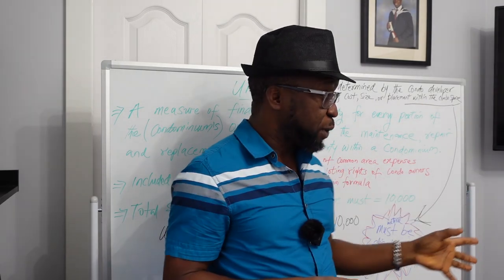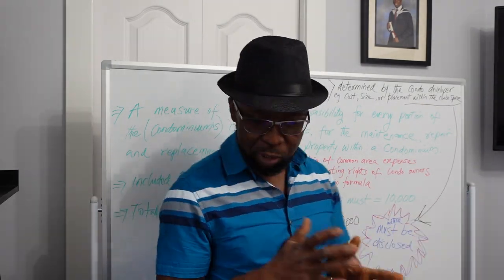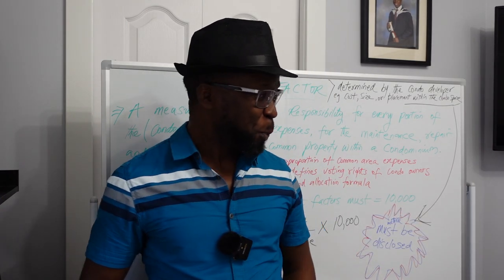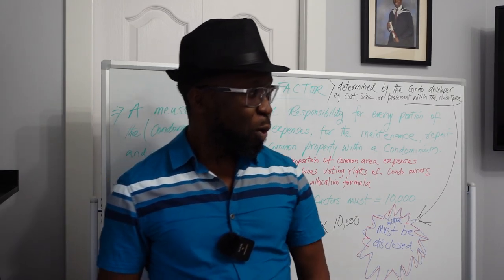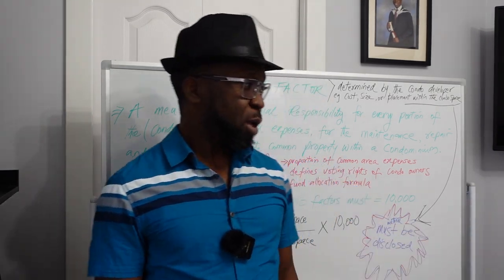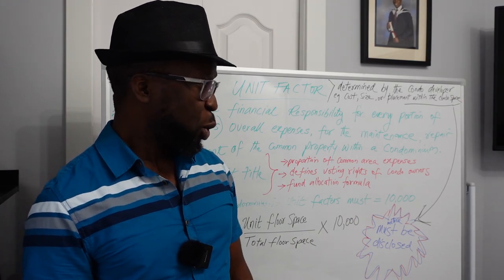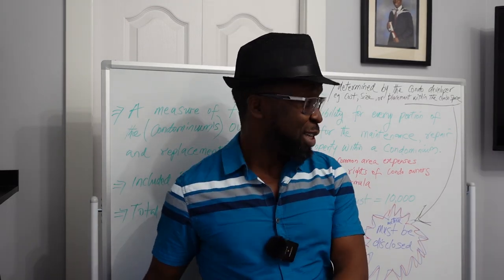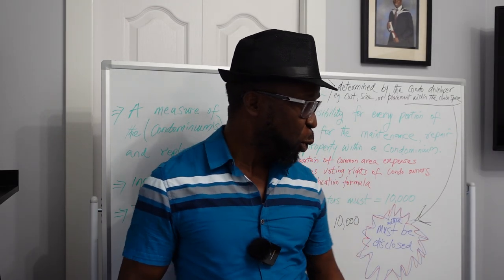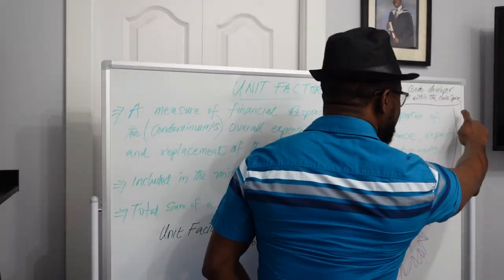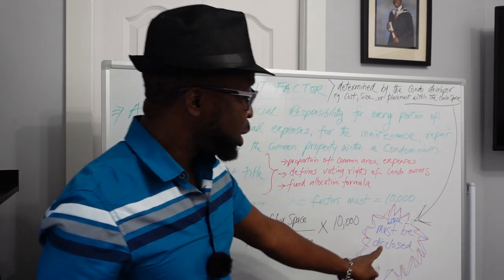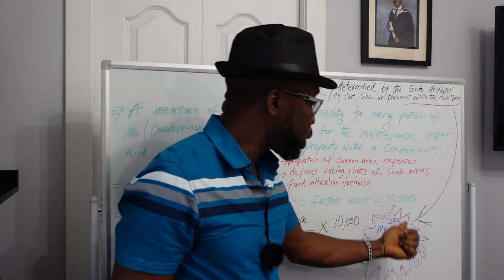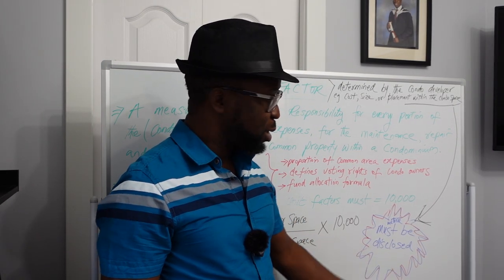For example, if your unit is by the corner, everybody will want that corner unit — it's more expensive. So they might decide the one in the corner will be allocated a higher unit factor value. If expenses are to be shared, you will still bear more expenses because yours is a more desirable unit. Whatever method the developer decides to use, that method must be disclosed. The condo developer determines what they're going to use, but they must disclose it so buyers know how their unit factor is determined.